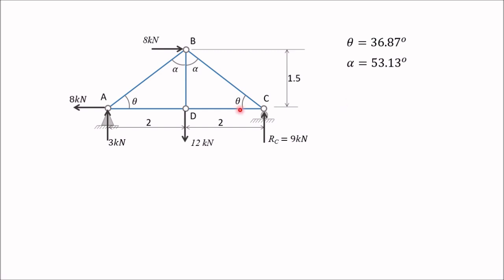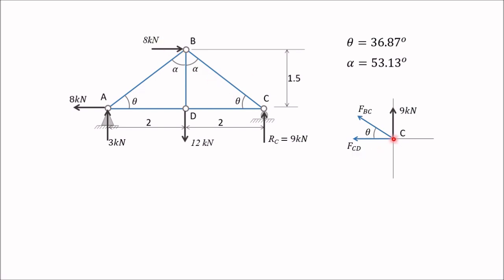Now we will start drawing free body diagrams of the joints. We start with joint C, which has two members connected: BC and CD. We draw forces along BC and along CD, directed away from C, assuming these members are in tension. If we get a positive answer the member is in tension; if negative, it is in compression. The free body diagram of C includes reaction 9 kN, force FCD along CD, and force FBC along BC — both away from joint C.